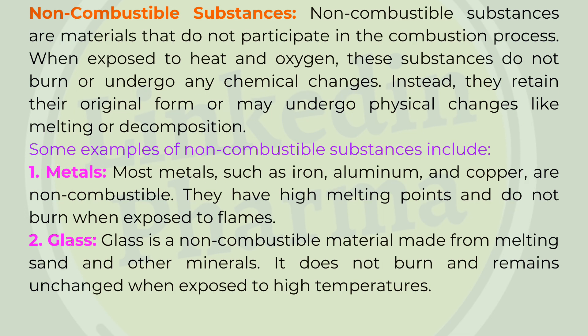Non-combustible substances are materials that do not participate in the combustion process. When exposed to heat and oxygen, these substances do not burn or undergo any chemical changes. Instead, they retain their original form or may undergo physical changes like melting or decomposition. Some examples include: 1. Metals — most metals such as iron, aluminum, and copper are non-combustible. They have high melting points and do not burn when exposed to flames.